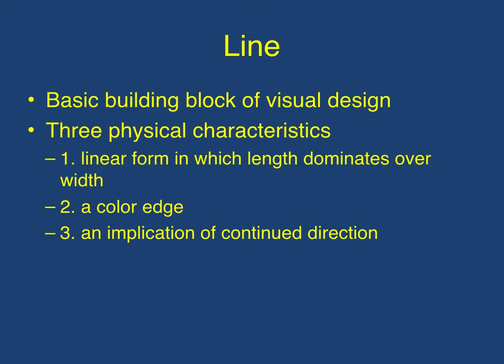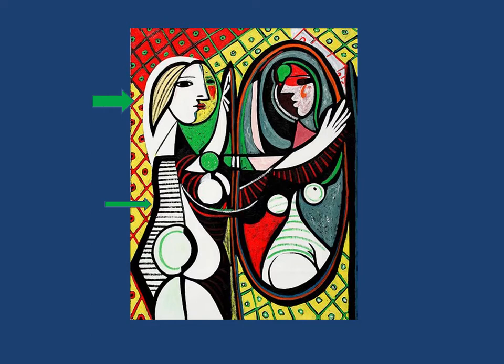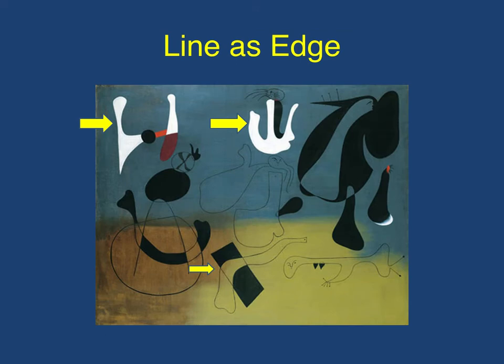Line is the basic building block of the visual arts. It has three main physical characteristics. The first type is the linear form, in which length dominates over width. As you can see on this slide where the yellow arrow is, this black outline — we have a very long line where the length is dominant over the width. You can also see here on the back with the green arrows: this line is an example of linear, and the longer lines in the background.